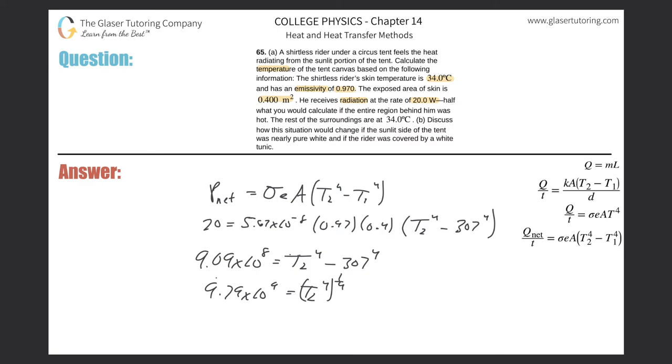Raise both sides up to the reciprocal of the power to get rid of that power. So now T2 is going to be, so we're going to raise to the 1/4th. And here we go, about 300 and 300 and looks like 15 about. That's in Kelvin.